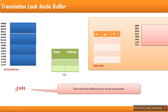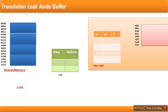Let's assume we have a virtual address 1101 that has to be accessed. In order to access the content of this address, it must be converted into a physical address. Whenever a virtual address is given, its page number is extracted first. The first two bits represent the page number because there are four total pages and two bits are required to represent them. The remaining two bits are used for the offset. These two page number bits will be checked in the TLB cache memory.